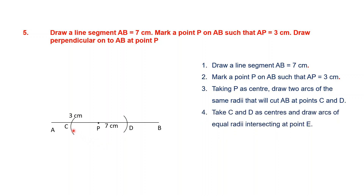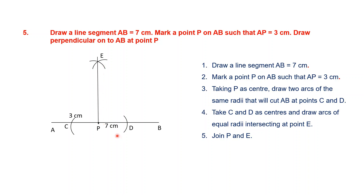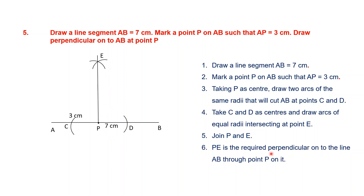Now take C and D as centers. Draw an arc from C, then take D as center and cut that arc — they intersect at point E. Now join P and E. PE is the required perpendicular to line AB through point P. We have drawn a perpendicular line meeting at point P according to the question. Question 5 is complete.